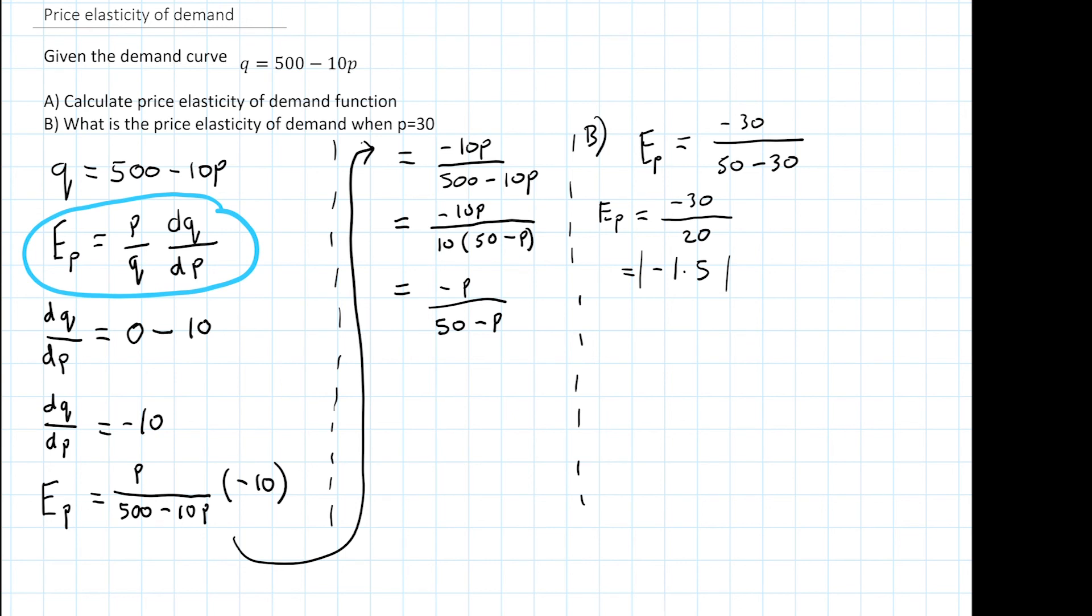So you can actually interpret this result and it's relatively simple. All it means is that when price increases 1%, demand falls by 1.5%, and that's all there is to it.